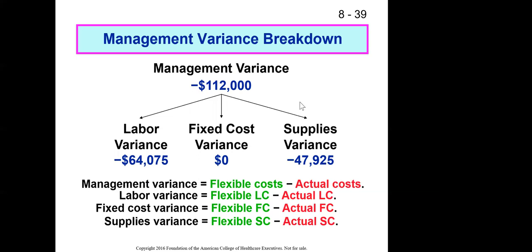You can break management variance down further. We'll do this in some of the problems, where we'll be able to say, for example, $112,000 in overall variance: $64,000 more in labor than we thought, and $47,000 more in supplies than we thought. That gives us better accountability of where the shortfall was, and we're able to drill down into management's behavior.